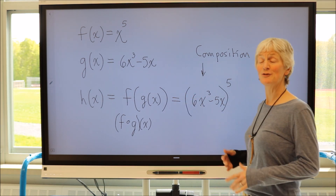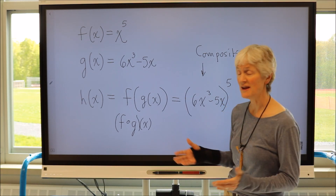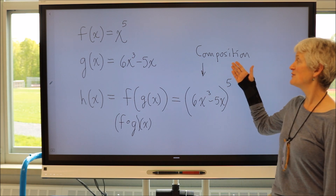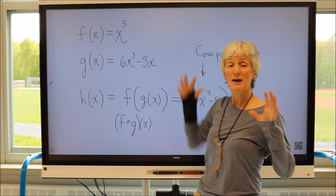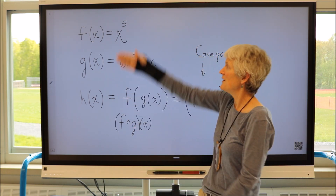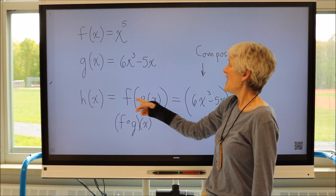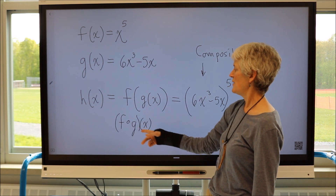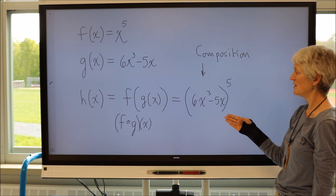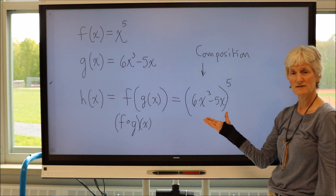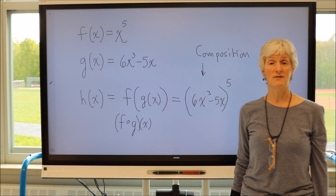We have been talking about how to take the derivative of functions using our shortcut rules. We're going to talk about the chain rule today, which allows us to take the derivative of a composition of functions. So if you remember, composition is when I put one function inside of another function. So here's f of x, here's g of x. If I'm defining h of x as f of g of x, I'm putting g of x inside of f of x as the input, and I result in this composition of functions. So the question is, how can I take the derivative easily and quickly of a composition of functions?